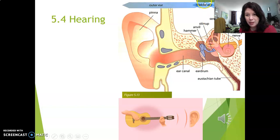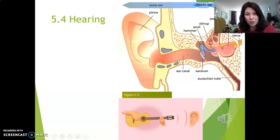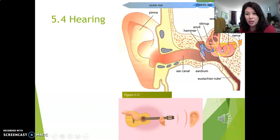You can see that the middle ear is this area where you can see the eardrum and three little bones: the hammer, the anvil, and the stirrup — hamer, aanbeeld, stijgbeugel. Look, it has a little shape of a stijgbeugel, a stirrup that you put on the horse's saddle. And then you can see the inner ear, where we have the semicircular canals, the cochlea, the auditory nerve, and then the eustachian tube — the buis van eustachius.